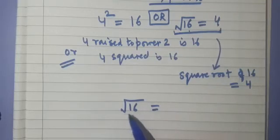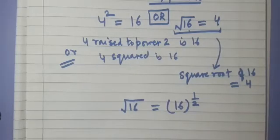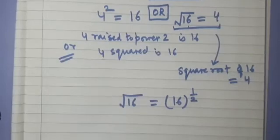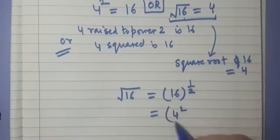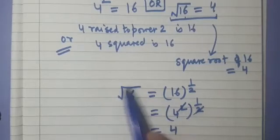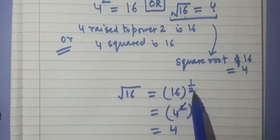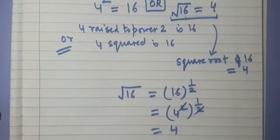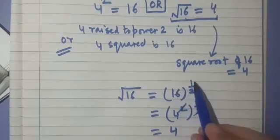Now we are trying to express the square root of 16 in terms of exponents. We can write this as 16 raised to the power 1 by 2. If we solve this: 16 is 4 squared, raised to the power 1 by 2, so the 2s cancel and we are left with 4. This is how we express a square root in exponential form.